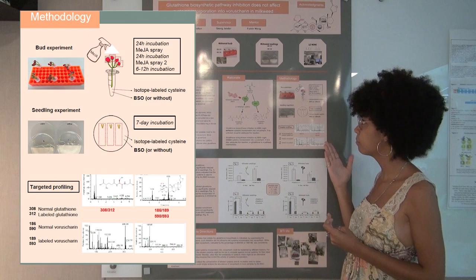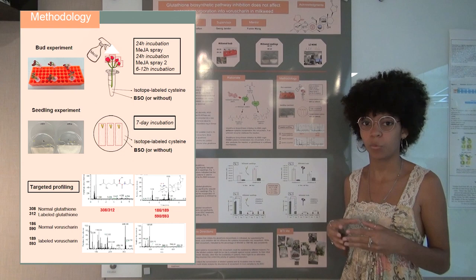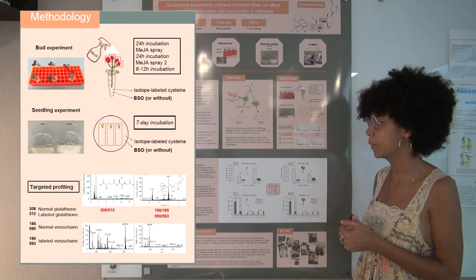We used three tubes not containing BSO as control and three tubes containing BSO. For our seedlings, we did the same thing except we used petri dishes - one petri dish contains BSO and another doesn't - and we had six seedlings, three in one and three in the other.